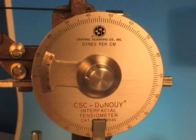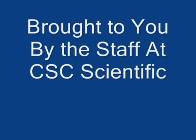At this point, the position of the dial indicator is the surface tension in dynes per centimeter. These are the steps to do a surface tension measurement using a CSC scientific tensiometer.